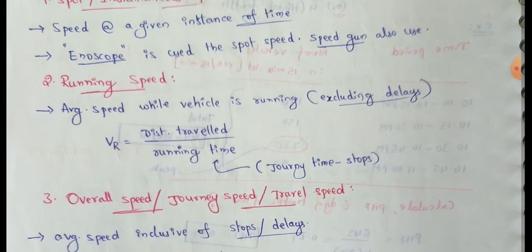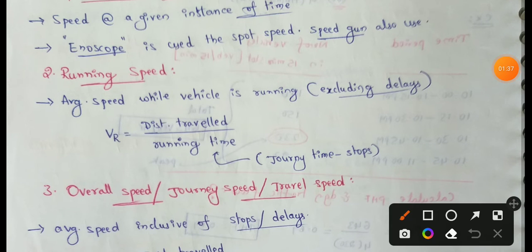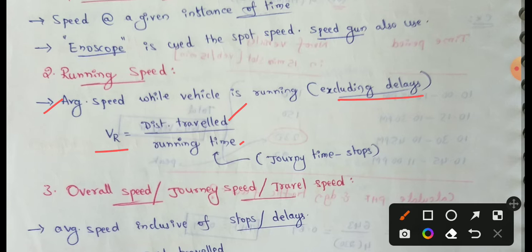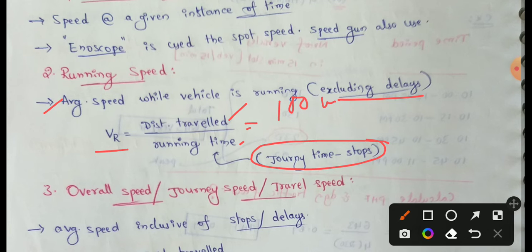Next is running speed. Running speed is the average speed while the vehicle is running, excluding delays and stops. Running speed equals distance travelled divided by running time, where running time means journey time minus stops.